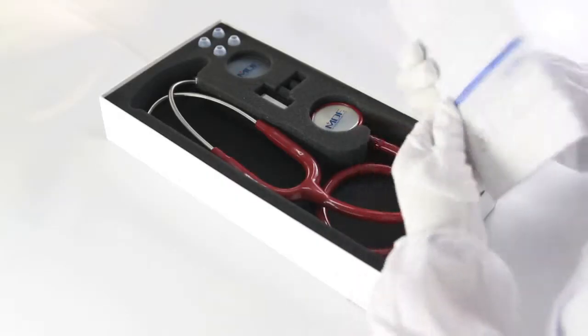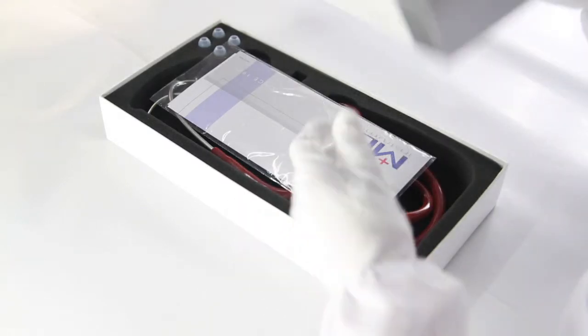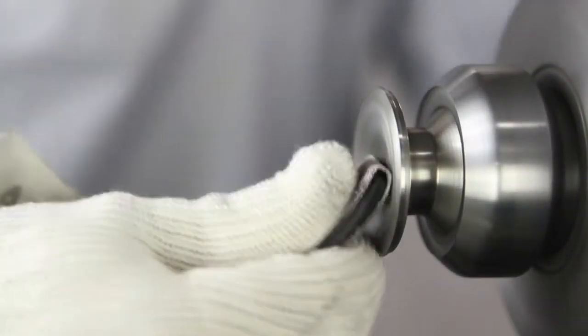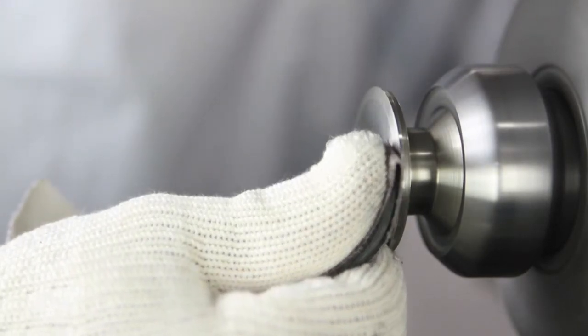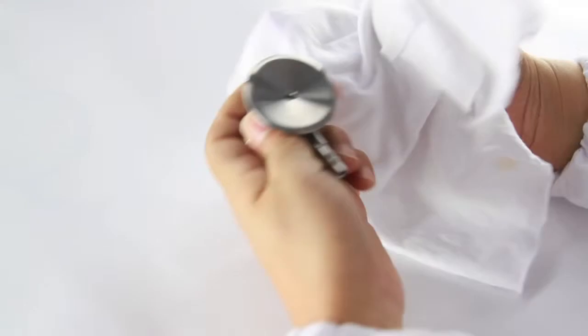Like all of our stethoscopes, the Pulse Time is covered by a full lifetime warranty, even on the tubing, and it has our clear silicone ear tips covered by our free parts for life program. So anytime you need ear tips, an ID tag, or a diaphragm, it's free. We're able to offer industry-leading warranties because all of our products are handcrafted for the best possible quality, and that's what we've been doing since 1971.